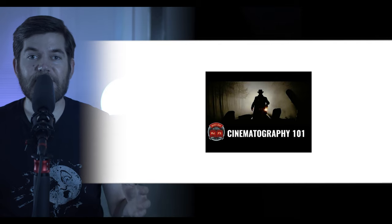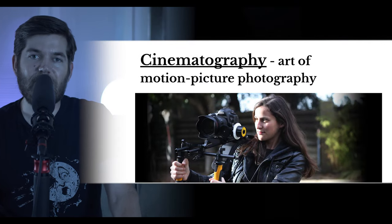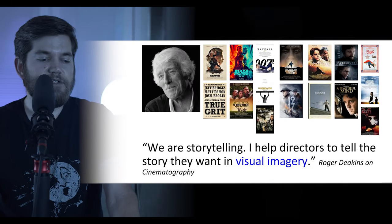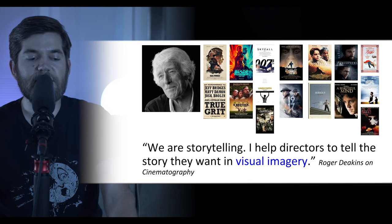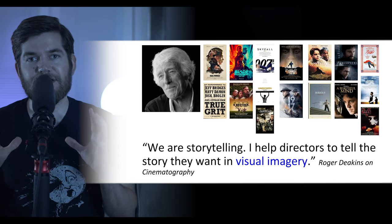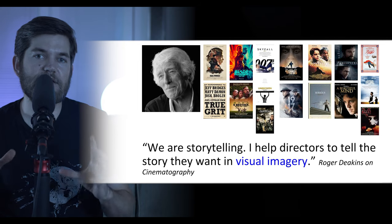Hopefully you checked out that Rocket Jump video. The first term that comes up is cinematography — the art of motion picture photography. It's photography for still images, and cinematography for moving images. Here are quotes from famous cinematographers. Roger Deakins reminds us that visual imagery is key: you are creating imagery with your camera, not just capturing what's in front of you — you're changing the way the audience sees the subject.